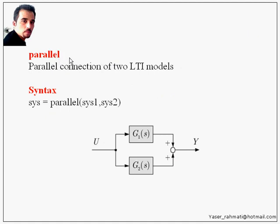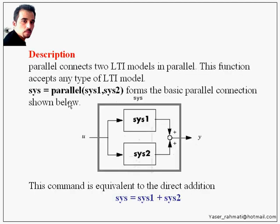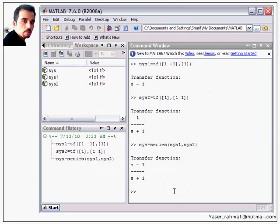The parallel function is used for parallel connection of two LTI models. Its syntax is: sys = parallel(sys1, sys2). Sys1 has the transfer function of G1 and sys2 has the transfer function of G2. Parallel connects two LTI models in parallel. This function accepts any type of LTI model. sys = parallel(sys1, sys2) forms the basic parallel connection shown below. u is the input and y is the output. This command is equivalent to the direct addition: sys = sys1 + sys2.